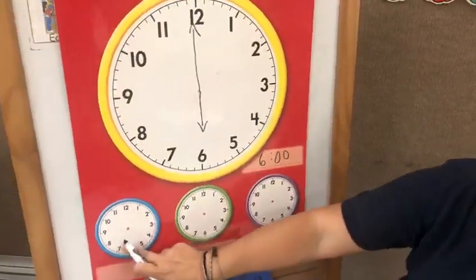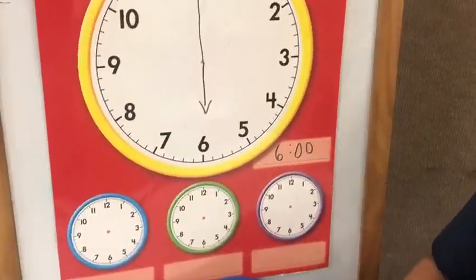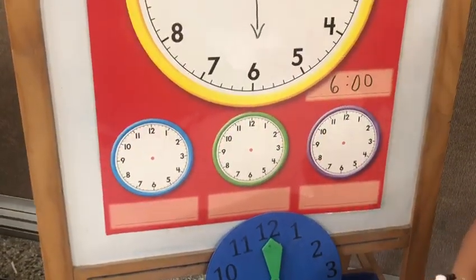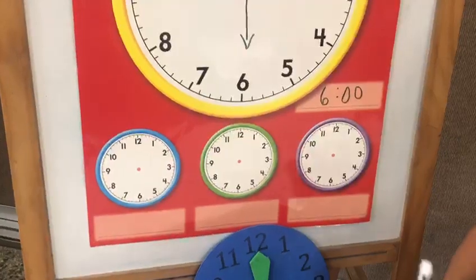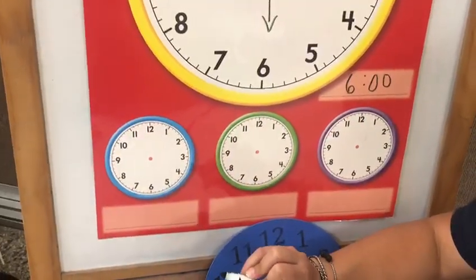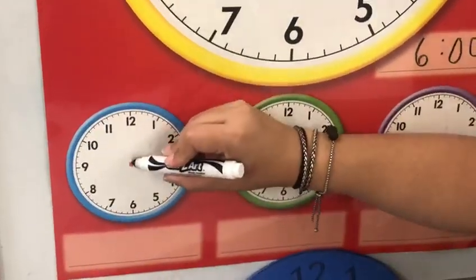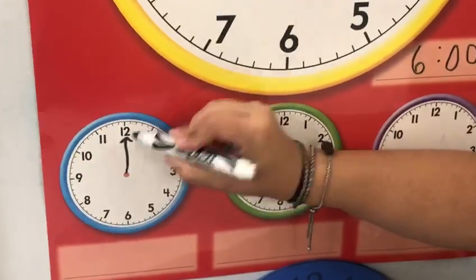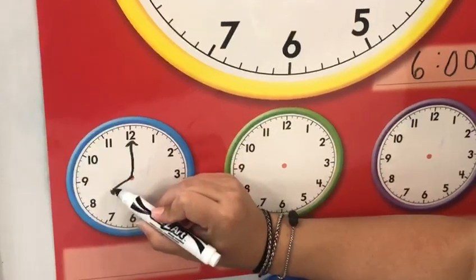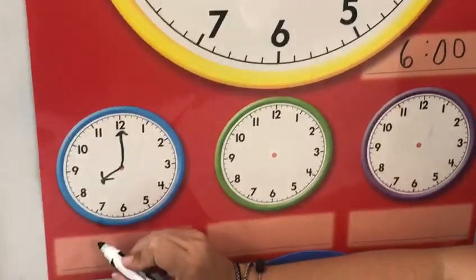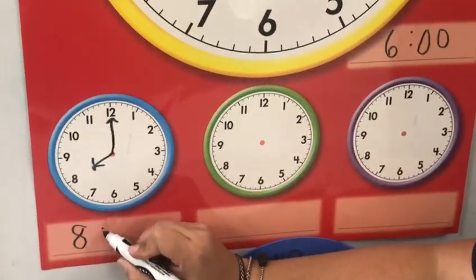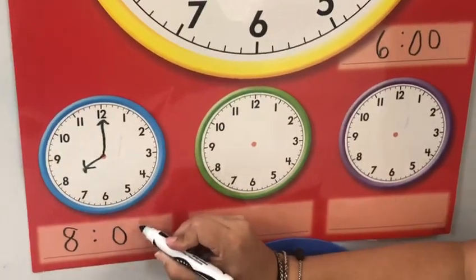Now we're gonna practice with these clocks that we have on the bottom. First, we're gonna start with an hour — like at what time we have breakfast in the morning? We can have breakfast at 8 o'clock in the morning. So that means the long arrow goes on 12, very good, and the little arrow is gonna be on 8. At 8 o'clock in the morning we normally have breakfast. You write the time like this.